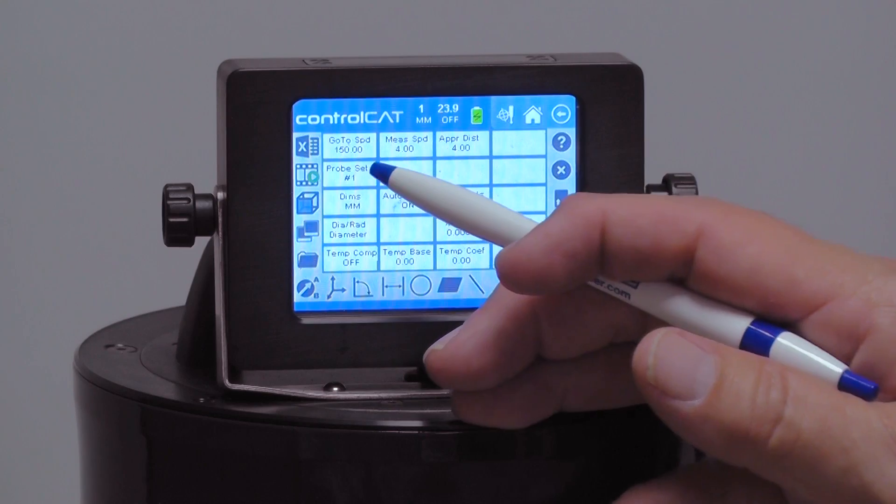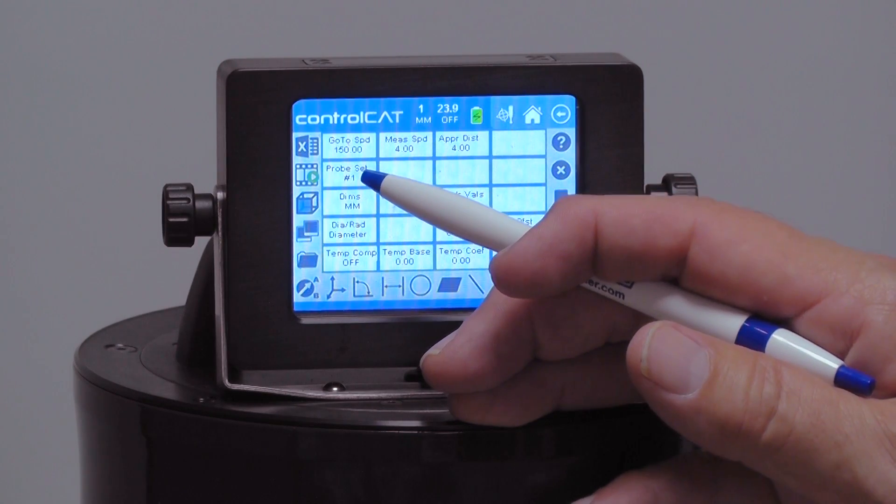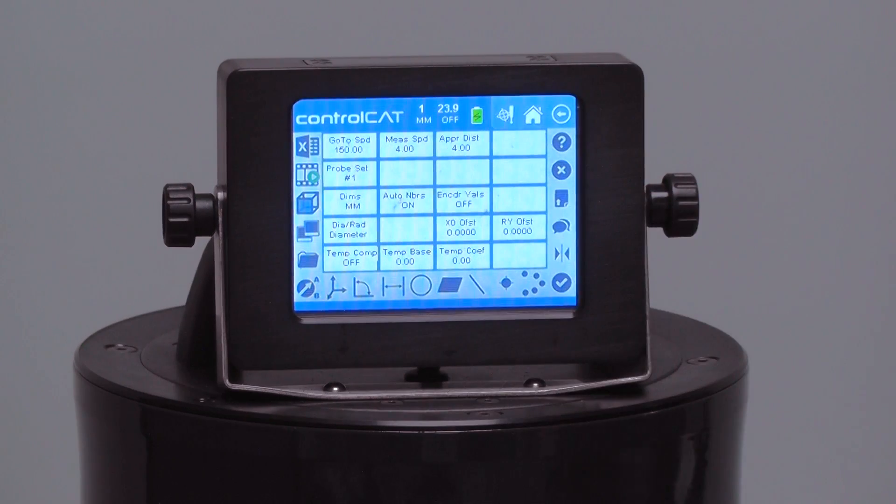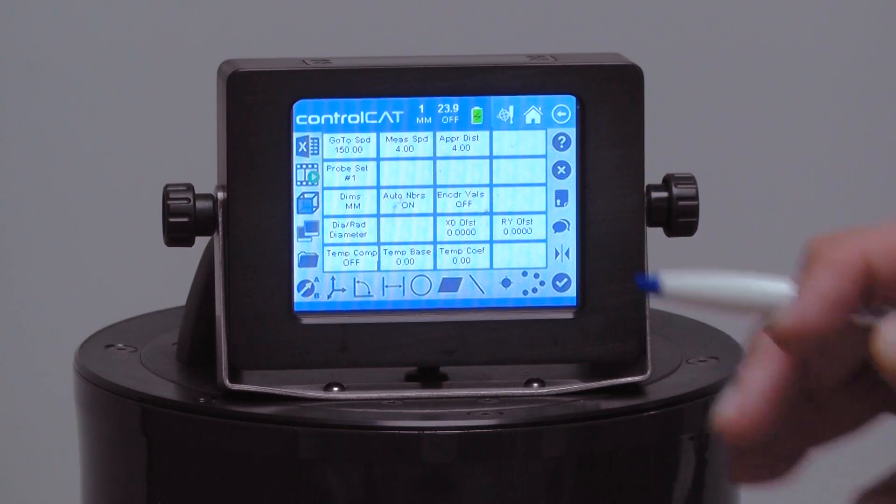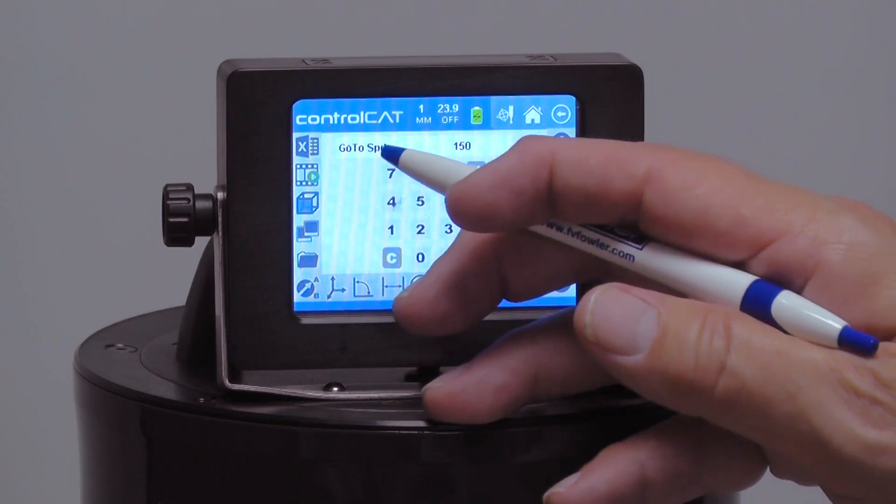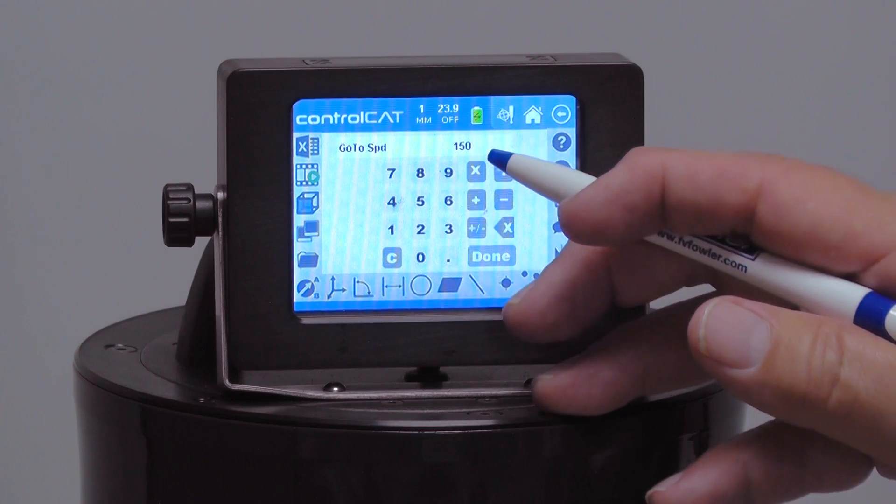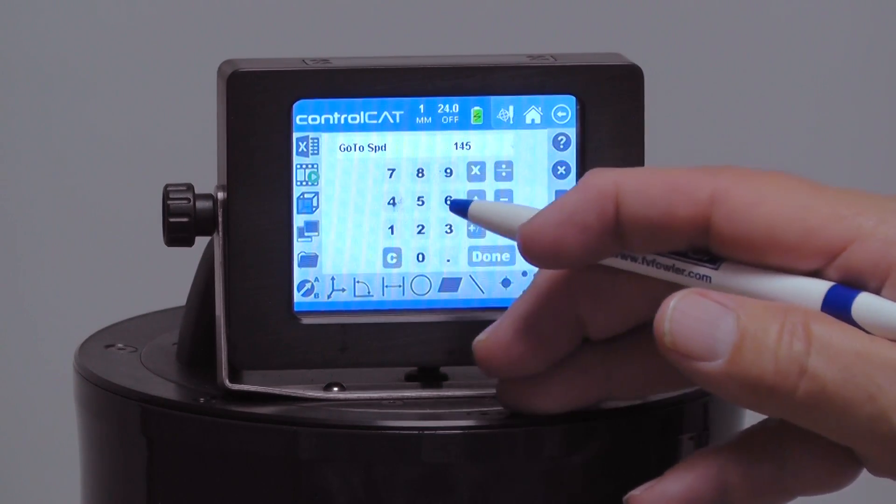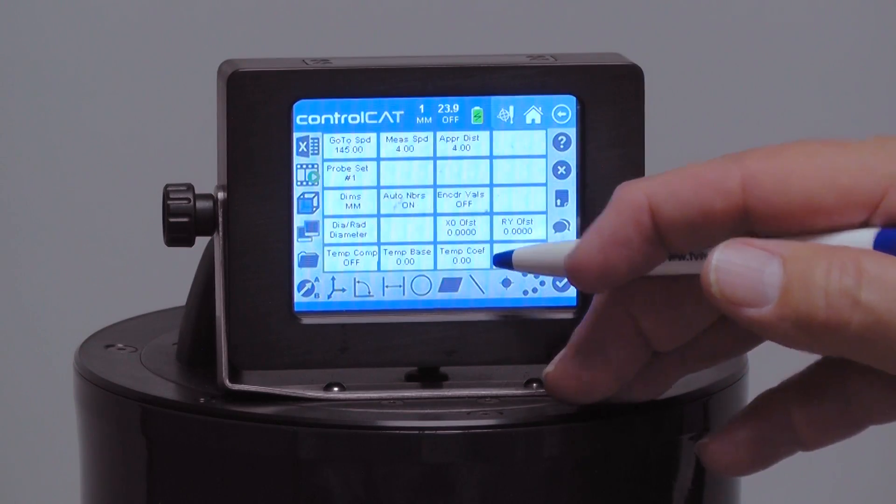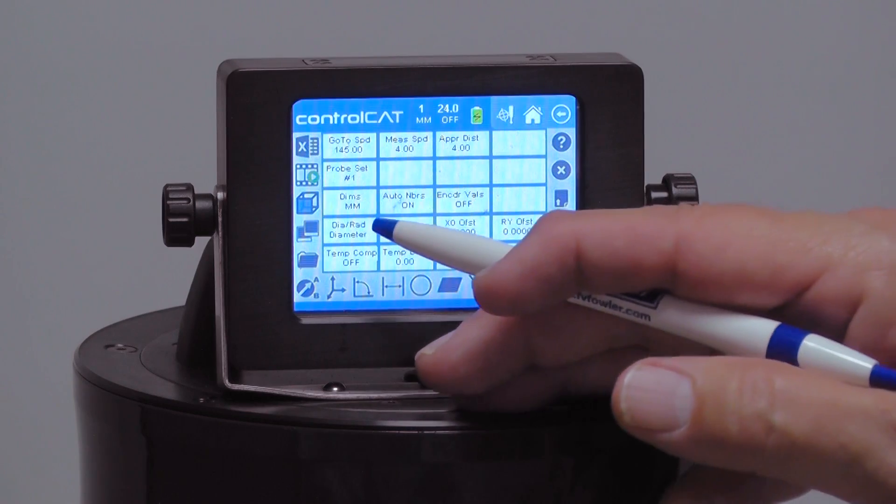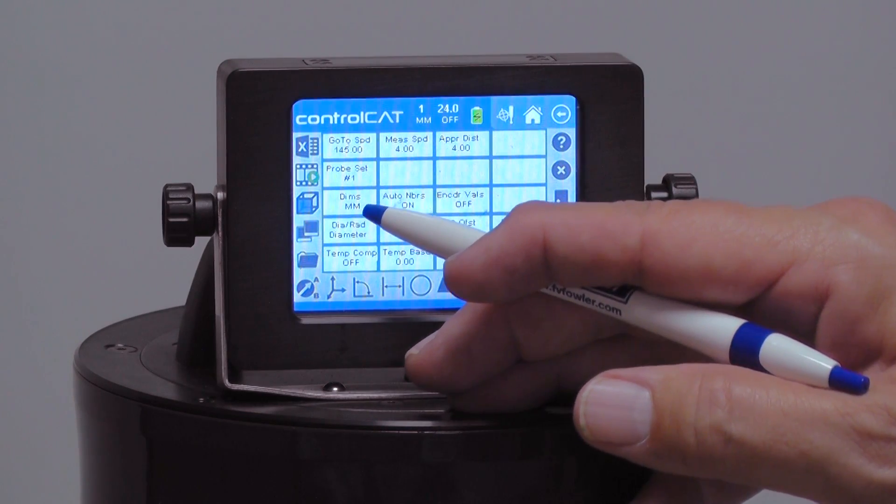The next box says probe set number one, and that's the one that comes with the Z cat. Again, this is part of the touchscreen, so if I wanted to edit one of these, like the go-to speed, I can touch it. It'll come up and say go-to speed is at 150. Maybe I want to make it 145 and hit done, and now it's adjusted to 145.